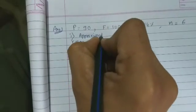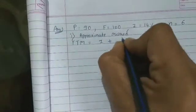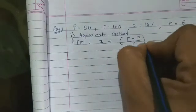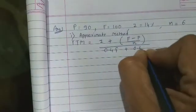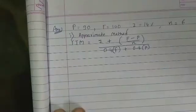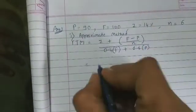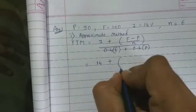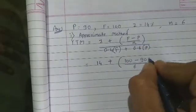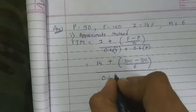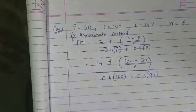First method: approximate method. YTM equals I plus (F minus P) upon N, divided by 0.4F plus 0.6P. Interest is always calculated on face value, so I = 14% of 100 = 14. So: 14 plus (100 minus 90) divided by 6, all divided by 0.4 into 100 plus 0.6 into 90. That gives 14 plus 10/6 in the numerator, and 40 plus 54 in the denominator.